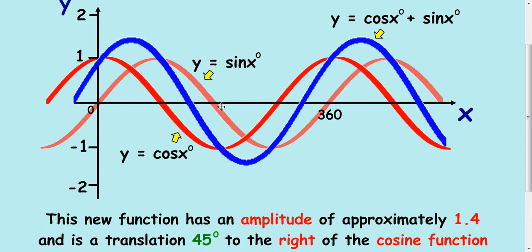we've got the cosine wave in the red, the sine wave in the darker red here. If we add these two together, we end up with this blue wave, which is cos x plus sin x.